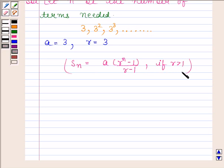Now, here sum to N terms of GP, that is S_N is given as 120. So now, we will substitute the value of A, R and S_N in this formula.